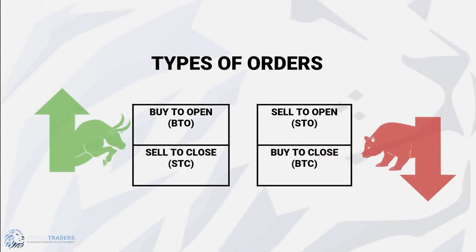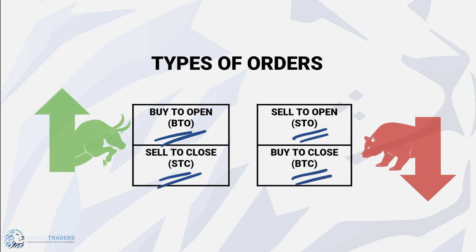Types of Orders. When you are trading options, there are four types of orders. Long Entry — Buy to open, or BTO, means you are going long on an options contract and opening a position. Sell to close, or STC, is when you are already long on an options contract and you are closing the position. Short Entry — Sell to open, or STO, means you are going short on an options contract and opening a position. Buy to close, or BTC, is when you are short on an options contract and you are closing the position.